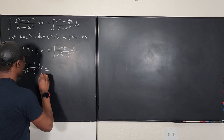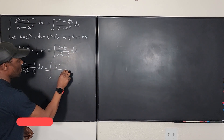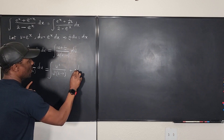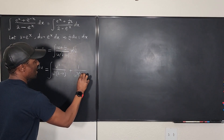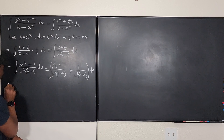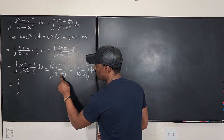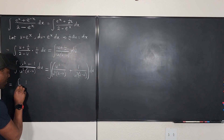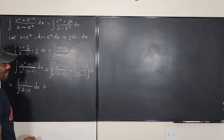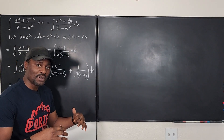Now I can split this up. The first part is u squared over (u squared times (2 minus u)), and the second part is 1 over (u squared times (2 minus u)) du. In the first part, u squared cancels, leaving just 1 over (2 minus u). The second part doesn't simplify as easily, so I need to do partial fraction decomposition.